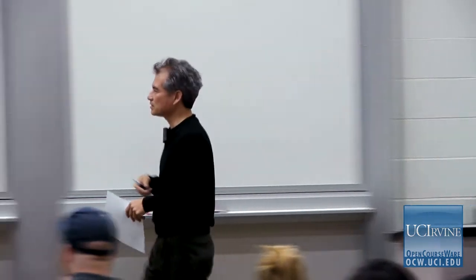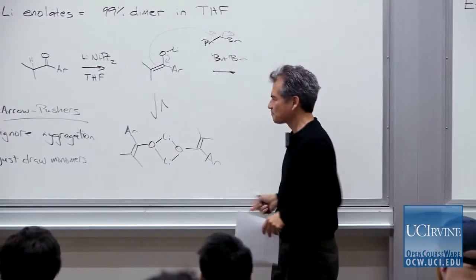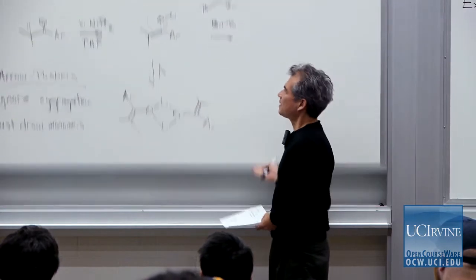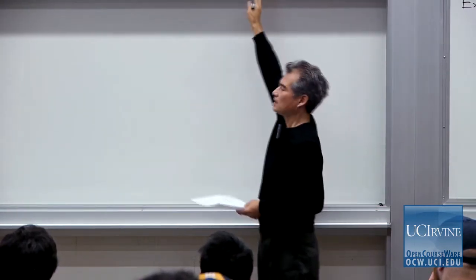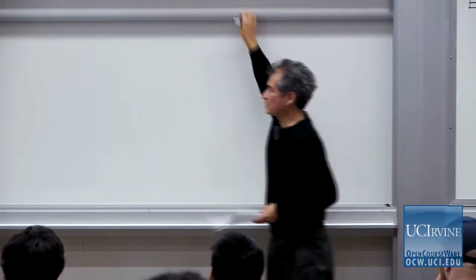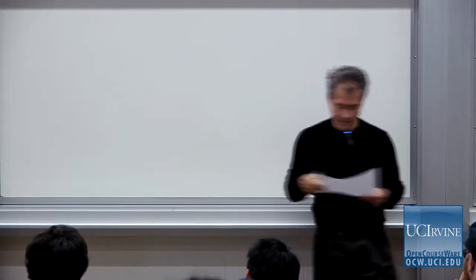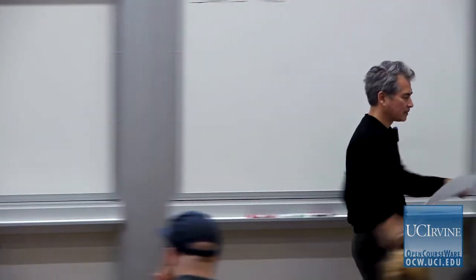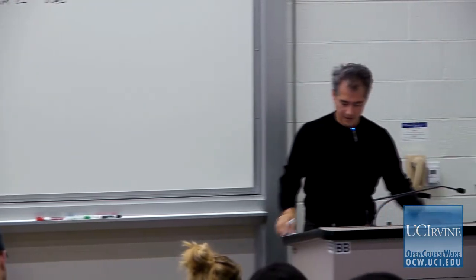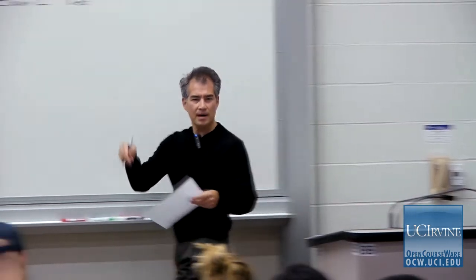This is the way we're going to do our arrow pushing in this class, and we find justification from this important study of Streitweiser showing that it's the monomers that are doing the work. So that's our rule for alkylithiums, for enolates — just draw the monomer.